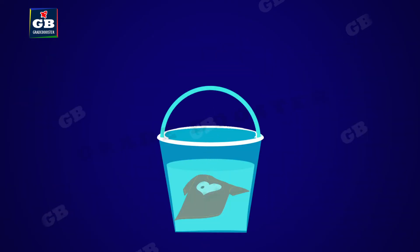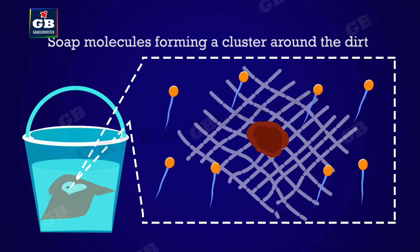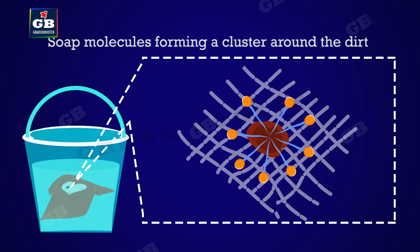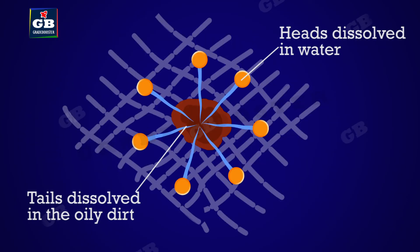When soap is added for cleansing, the head dissolves in water while hydrocarbon chain dissolves in oily dirt. They get arranged in a specific pattern: the tails of all molecules are arranged towards the oil droplet while the ionic ends or heads face outside.